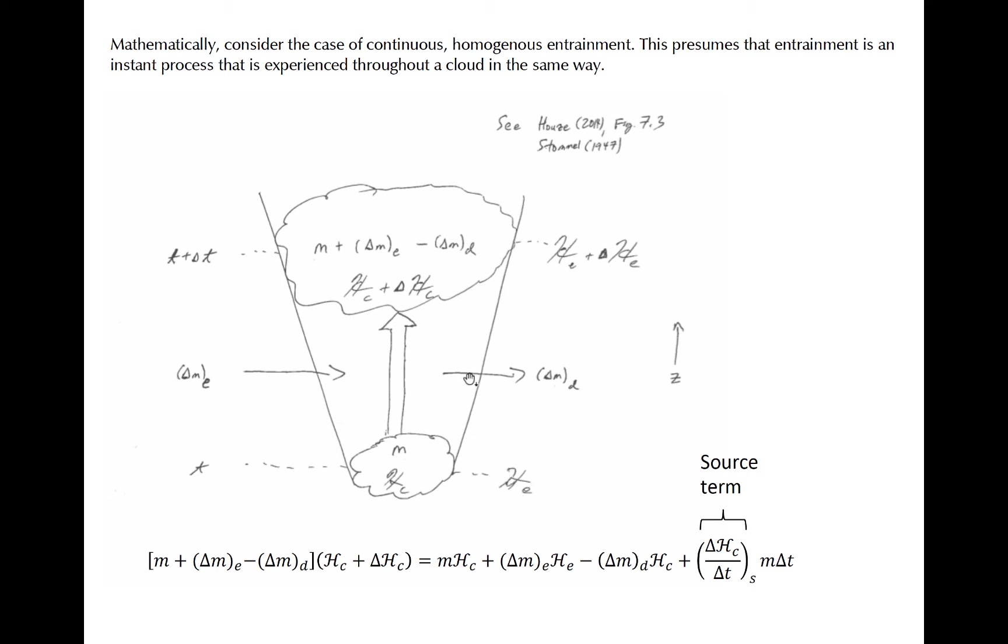At the top of the figure is the same cloud at some time delta t later. You see that the cloud expands adiabatically. It has a new mass that includes the mass entrained from the environment and excludes the mass detrained from the environment. So you have plus delta M sub E minus delta M sub D. The new enthalpy variable is the original plus whatever change there is, delta H sub C. And that change is caused by entrainment. Finally, a source term, which is shown right here, contains all of the internal processes that cause a change in our scripted H variable.